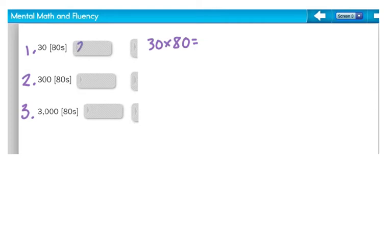30 eighties is worth 2,400. Three times eight is still 24 and three zeros: 24,000. Eight times three is 24 and four zeros: 240,000. Then count your numbers to put in your commas.